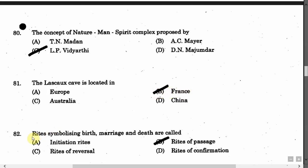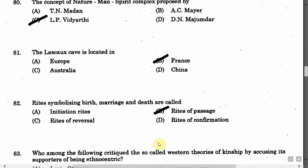The next question is: Rites symbolizing birth, marriage and death are called — Option A: Initiation rites. Option B: Rites of passage. Option C: Rites of reversal. Option D: Rites of confirmation. The correct answer is Option B, that is rites of passage.